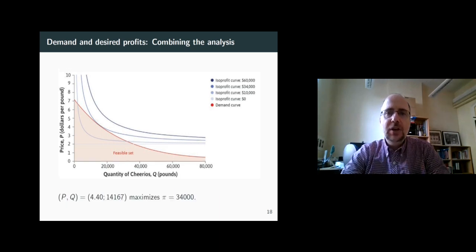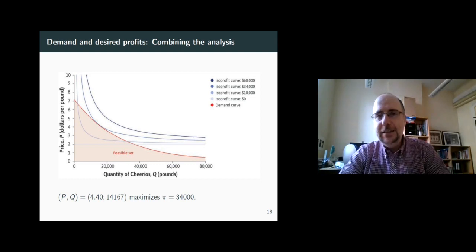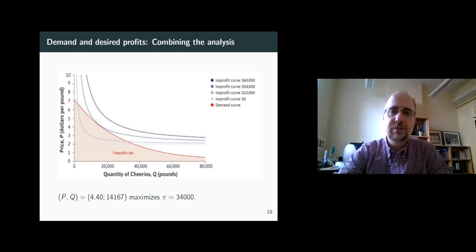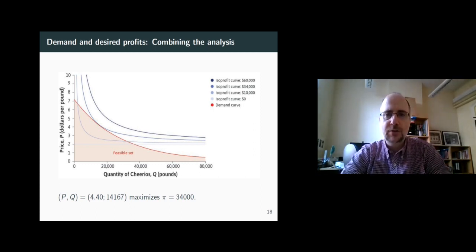So the firm is constantly facing a constrained optimization problem. How to choose my price and how to choose my quantity so that I maximize my profit, knowing that at the same time, I'm constrained by the demand curve. In the general case, there will be a combination of P and Q which are both feasible and maximize the profit. In this particular case, a price of 440 and a quantity of slightly over 14,000 will do it. The maximum profit which the firm can get, meanwhile, is 34,000. So now you know how the firm prices its products and determines its quantity.